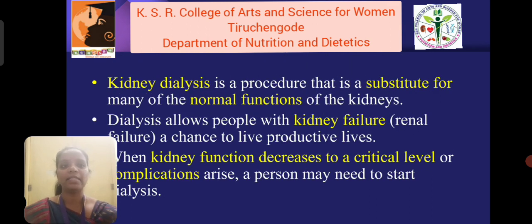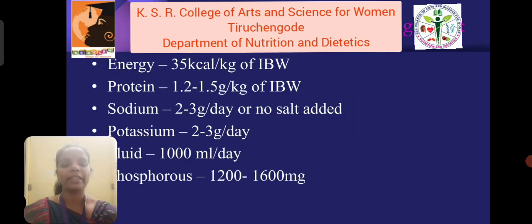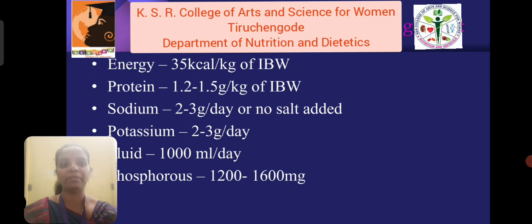Kidney dialysis is a procedure that substitutes for many of the normal functions of the kidney. Dialysis allows people with kidney failure a chance to live productive lives. When kidney function decreases to a critical level or complications arise, a person may need to start dialysis. There are two main types: hemodialysis and peritoneal dialysis. Dietary management: energy 35 kilocalories per kg body weight; protein 1.2 to 1.5 grams per kg body weight; sodium 2 to 3 grams per day or no salt added; potassium 2 to 3 grams per day; fluid 1000 ml per day strictly; phosphorus 1200 to 1600 milligrams is recommended.